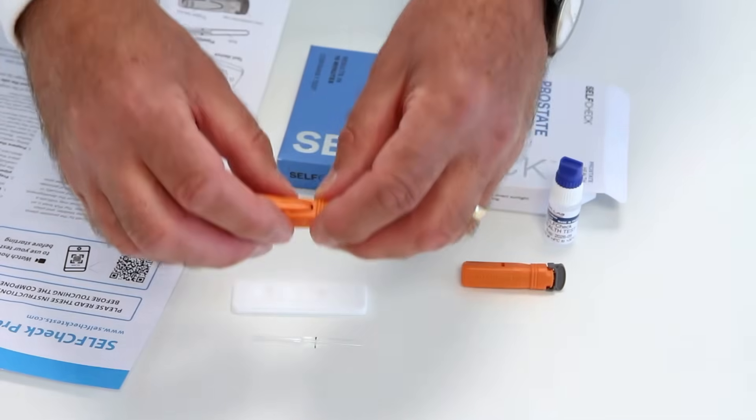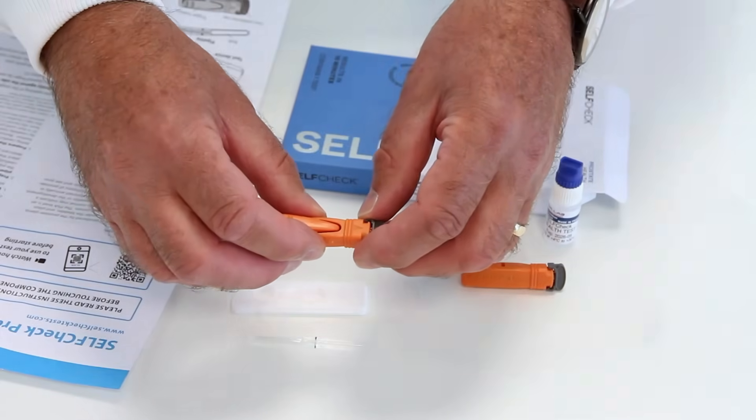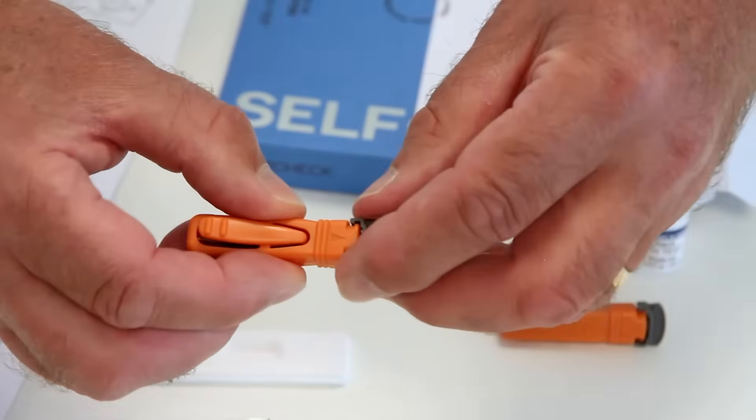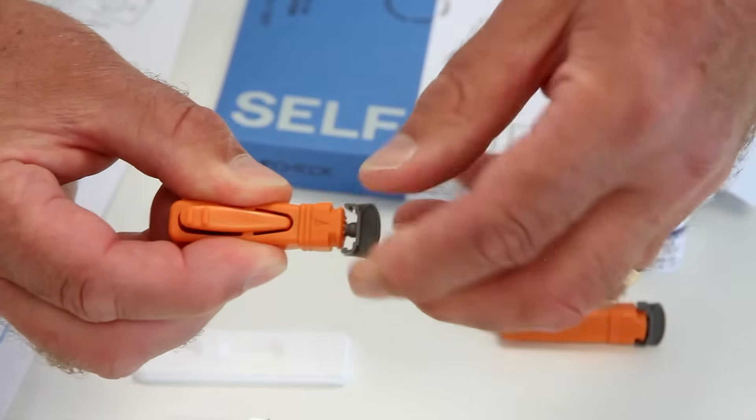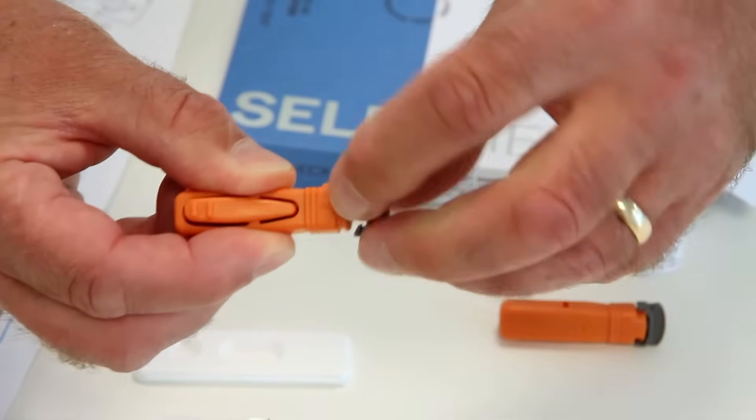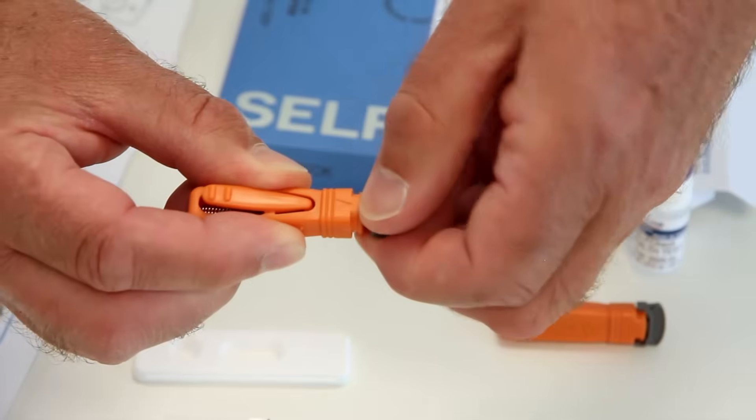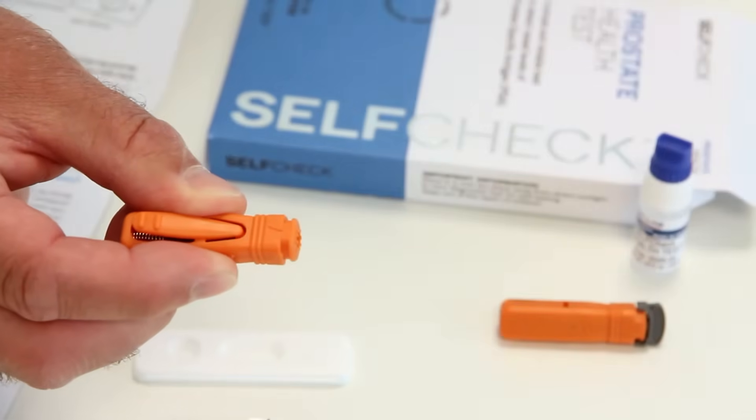Pick up one of the lancets, taking care not to touch the trigger button. Twist the cap three to four turns, then pull off the cap. You won't see the small needle as this is hidden within the lancet. Discard the grey cap.